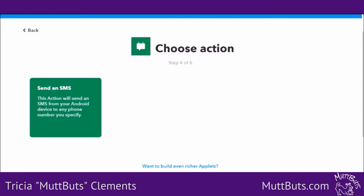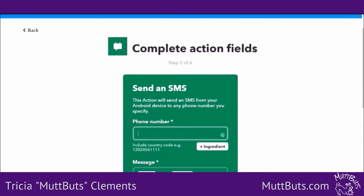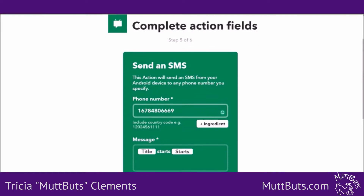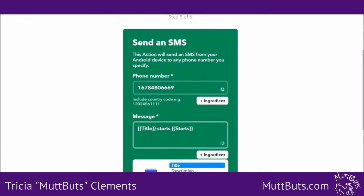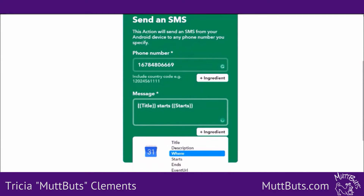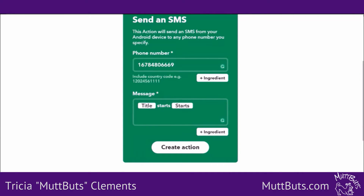That will be my Android SMS — Send an SMS. This action will send an SMS to your Android device. Put your phone number in and make sure you put the one. I like to leave the message as is. You can add what they call ingredients. So the message I'm going to get texted is going to say whatever the name of the event is, when it starts, and then the starting time and date. You can add ingredients like where — if it's at a specific place, you can add that as well, but you don't have to.